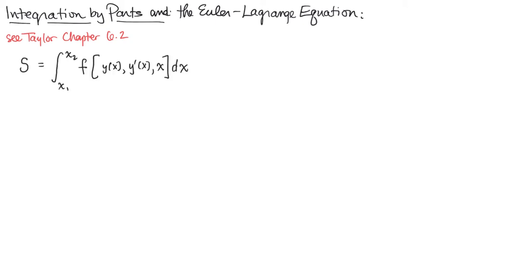This is done in your text, and we want to just focus on one step of the derivation where integration by parts comes to the rescue. So here's the setup. We have an integral of some function of a path y of x and its derivative dy dx, and perhaps also just of x itself integrated over x from a starting position to an ending position.